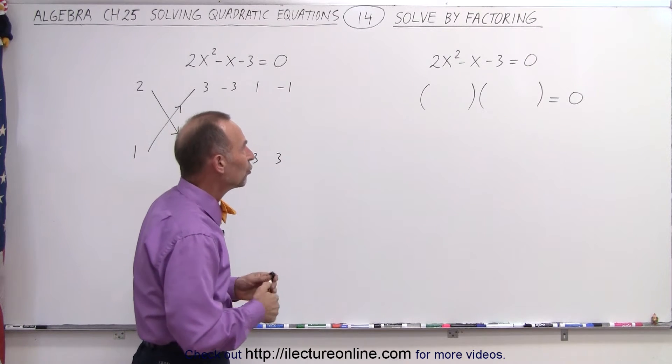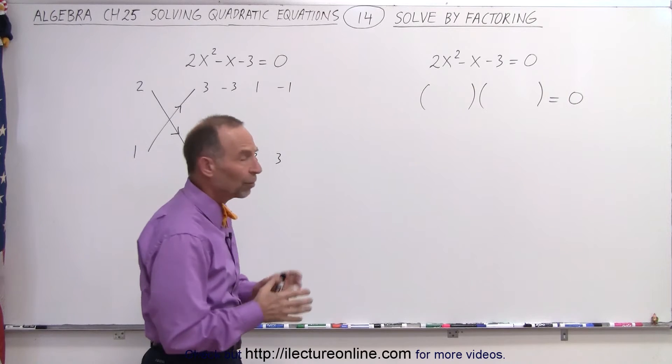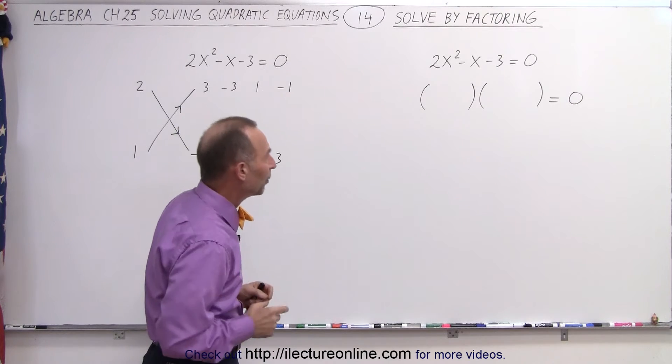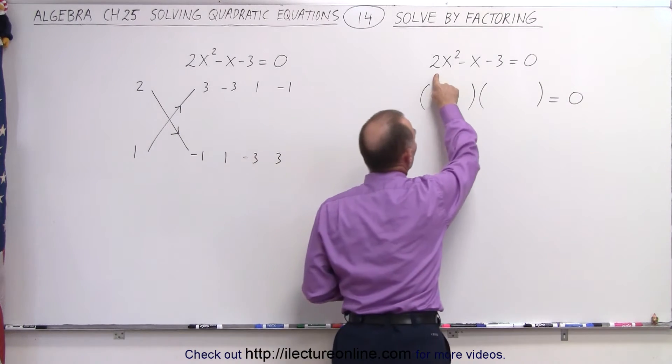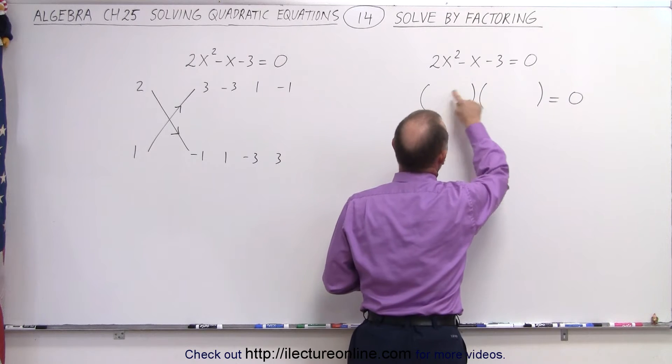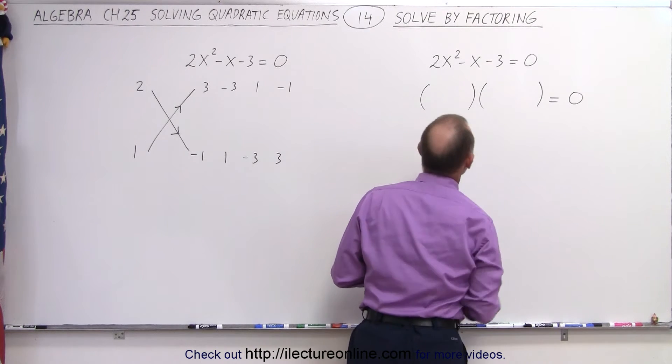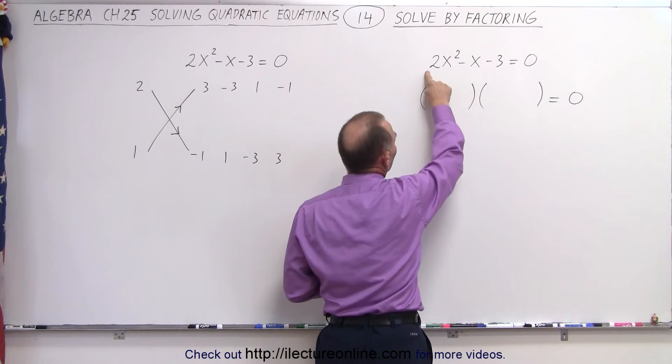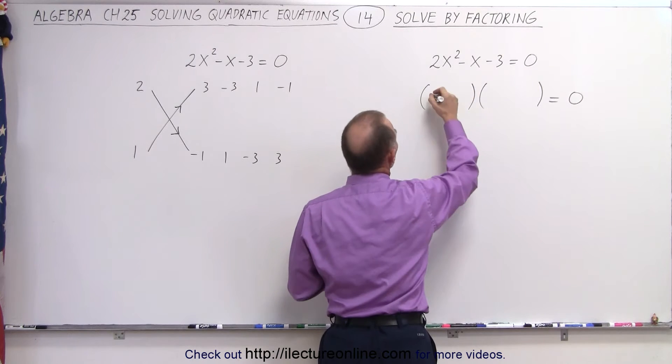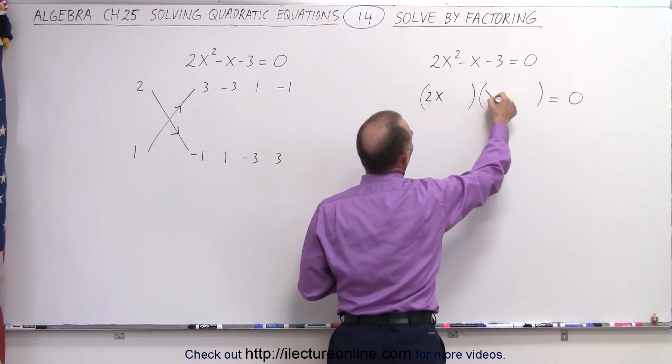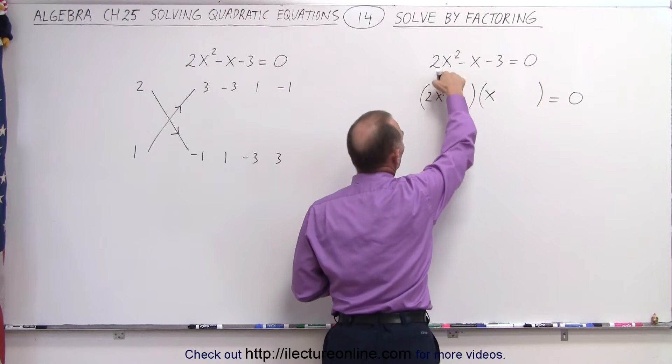So here we can simply use factoring, and sometimes you can see right through the problem. We take a look at the first term and we take a look at the last term to determine what we should put in the two binomials here. Since we have a 2x squared here, that means we need a 2x and an x, because x times 2x gives us 2x squared.